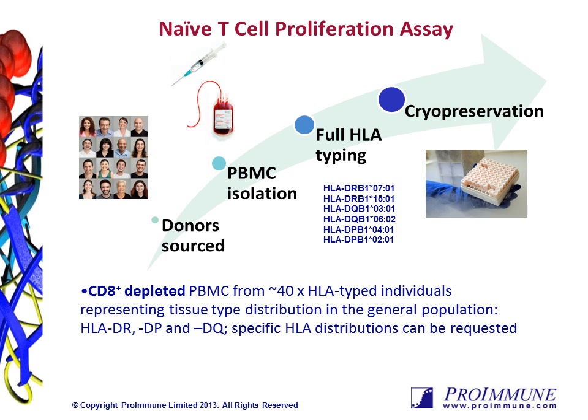Proimmune offers an integrated, best-in-class assay platform that allows you to evaluate the potential for immunogenicity risk specific to your program needs. For example, to map functional T-cell responses or confirm peptide epitopes, the ProMAP Naive T-cell Proliferation Assay can be used.